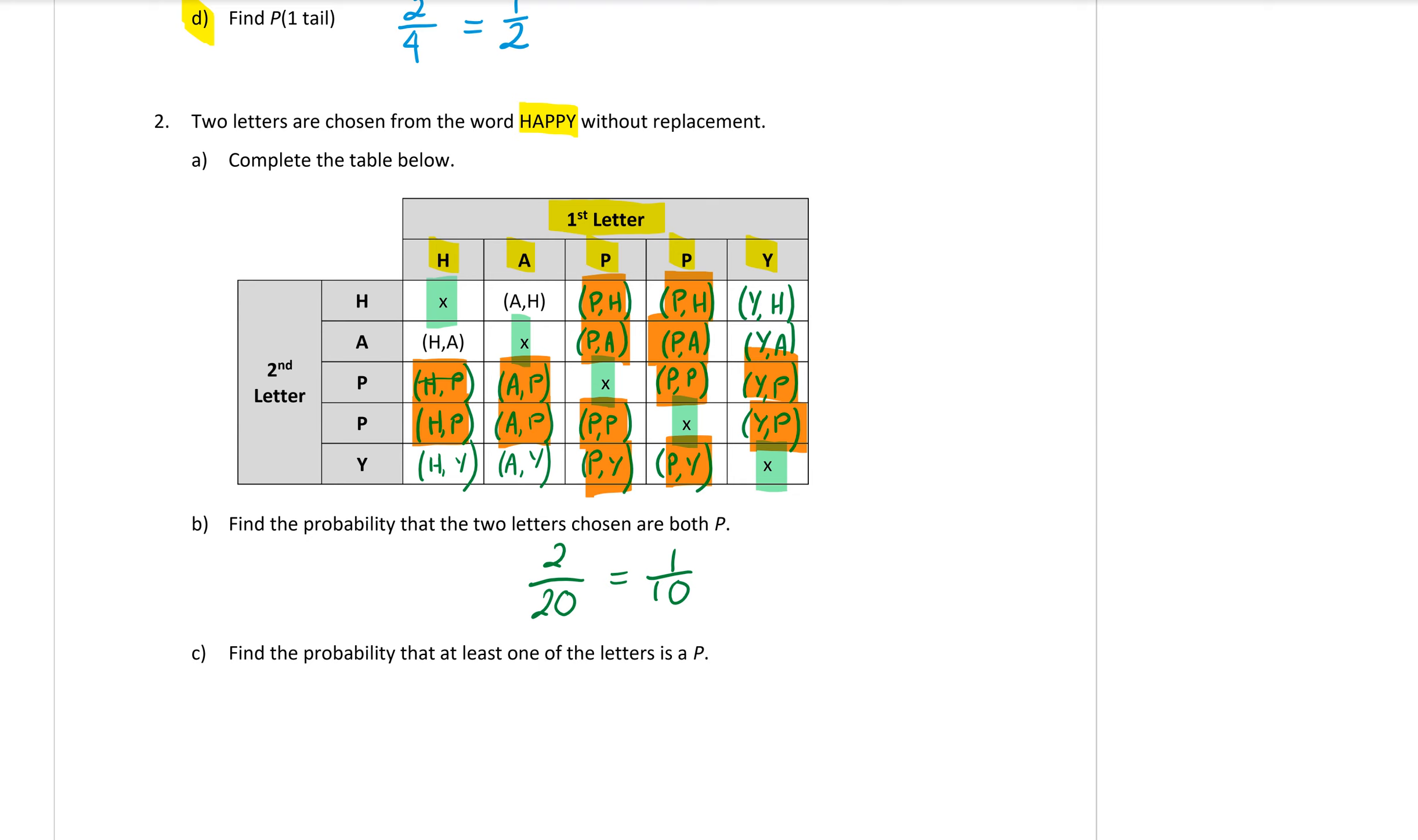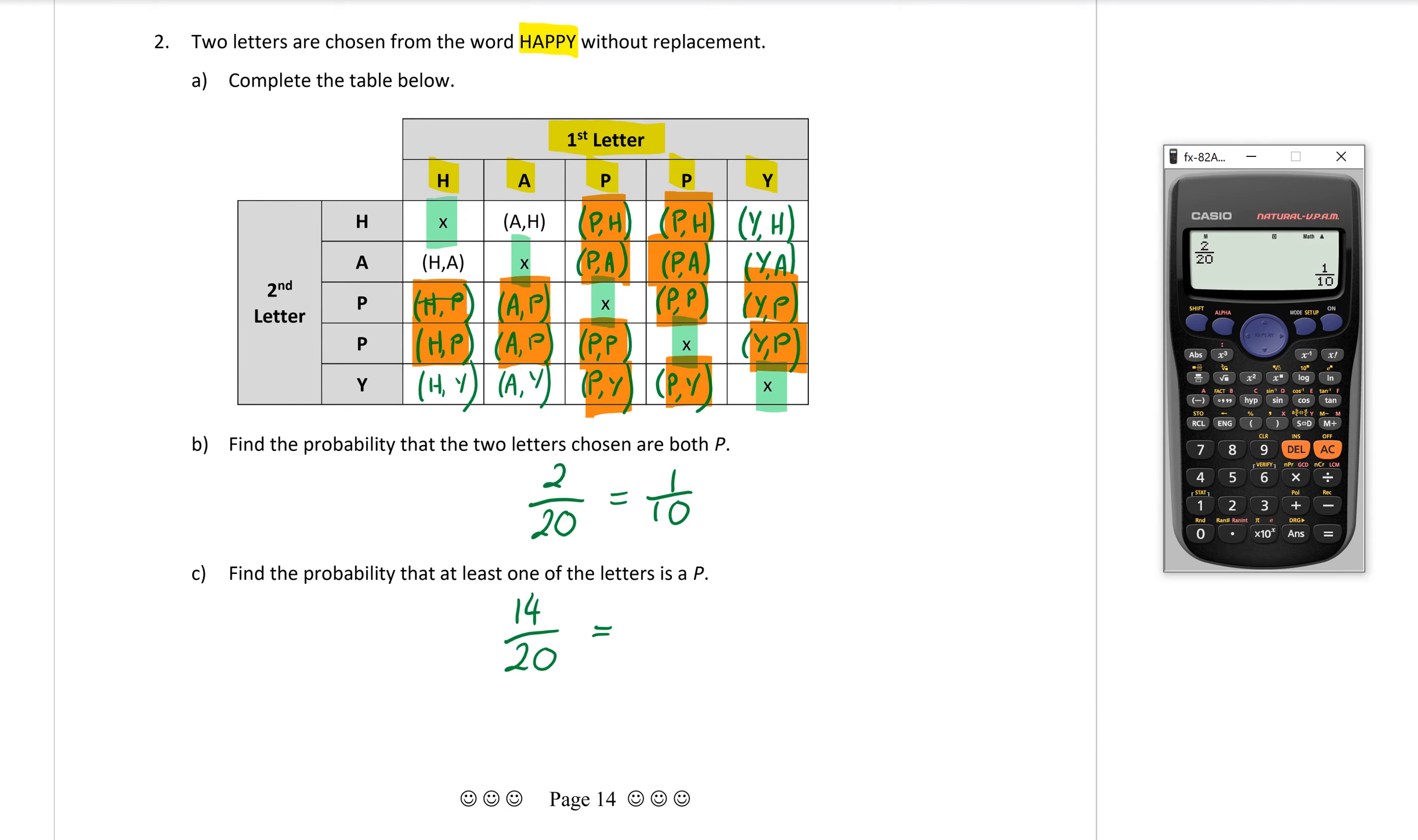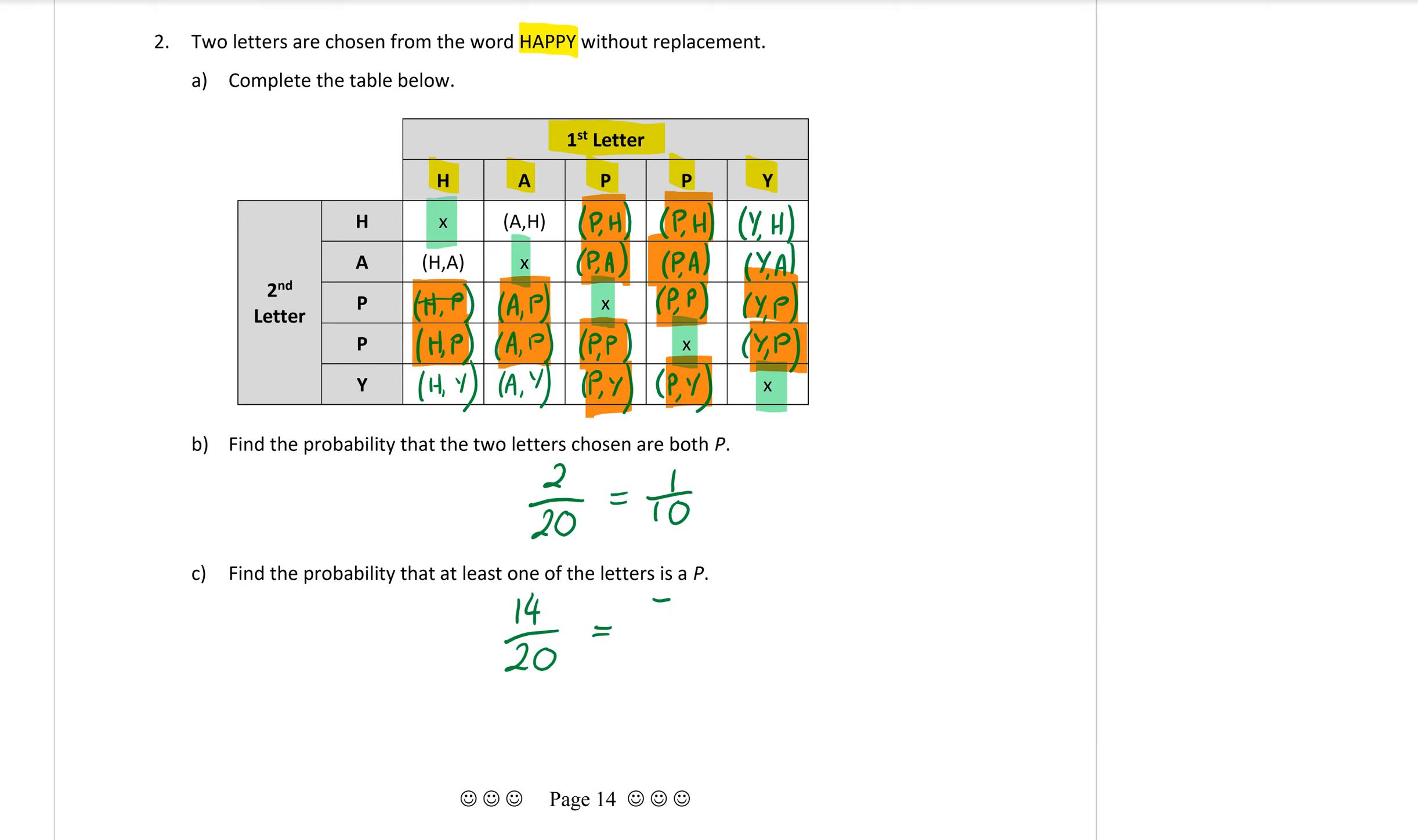So we need to count how many there are: one, two, three, four, five, six, seven, eight, nine, ten, eleven, twelve, thirteen, fourteen. Fourteen out of, now you count them again, but there should still be twenty. There's still twenty outcomes in that table. So fourteen out of twenty simplified on the calculator is seven out of ten.